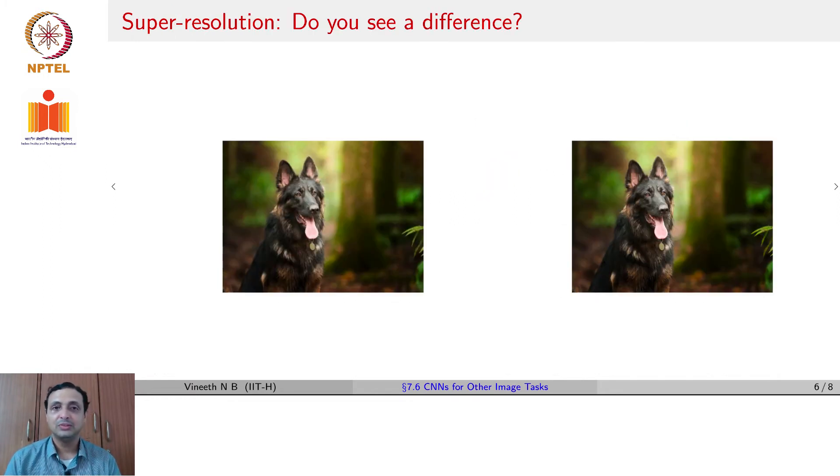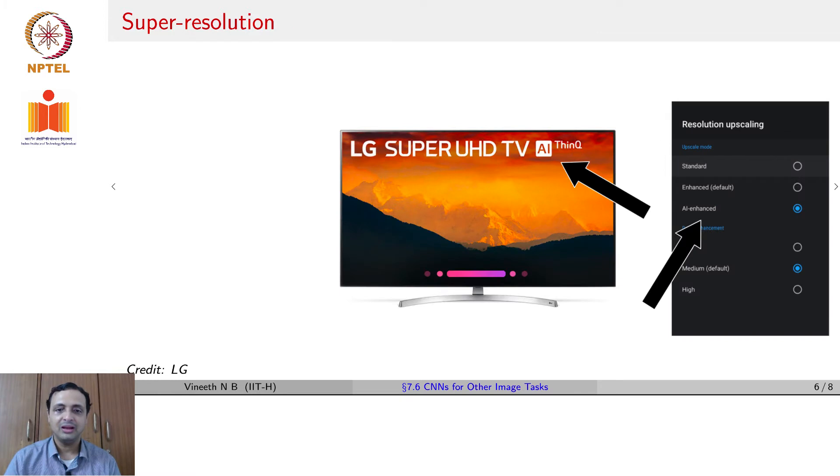Another task which is growingly popular with deep neural networks is the task of super resolution. Can you see a difference in these two images? There is no semantic difference, but there is perceptual difference in terms of the resolution of the right image or the left image. And this is used extensively to improve the resolution of content. Today, televisions have already started enhancing the resolution of the image presented on the screen using such approaches. Here is an example of an LG screen, which in its settings allows you to choose an AI enhanced resolution upscaling option, which in fact does super resolution to get the final image on the screen.